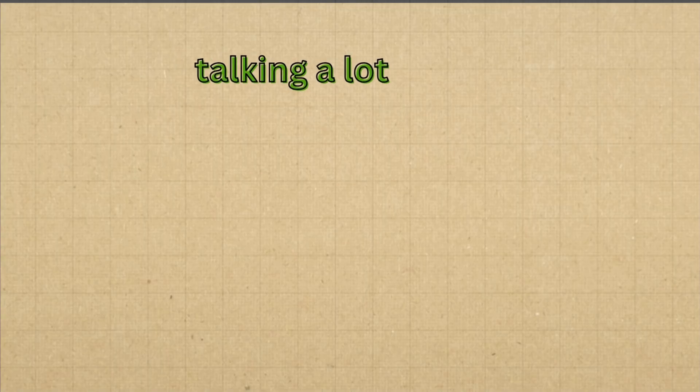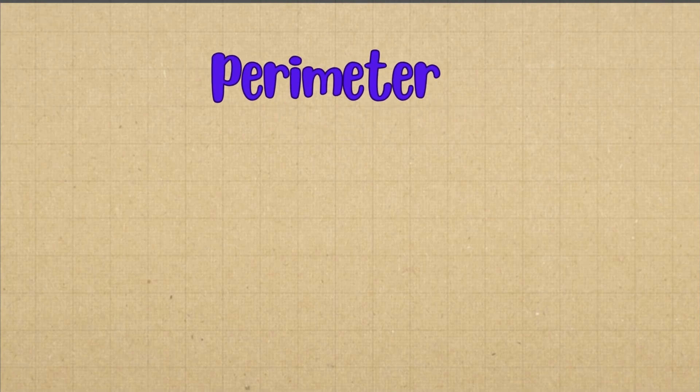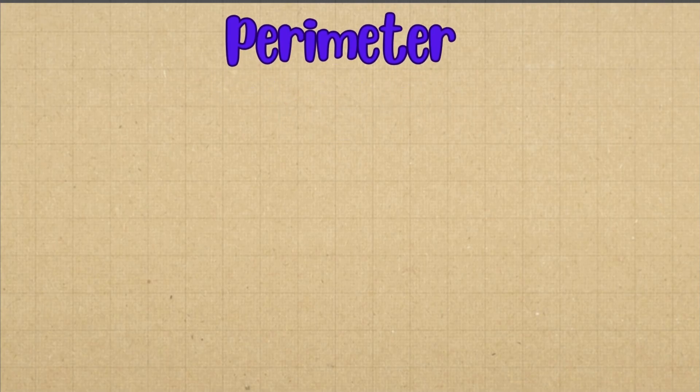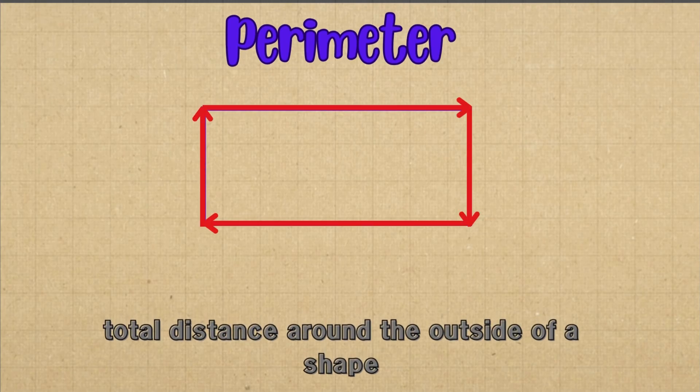We've been talking a lot about long division lately, but today we're switching to a new concept called perimeter. Perimeter is simply the total distance around the outside of a shape.